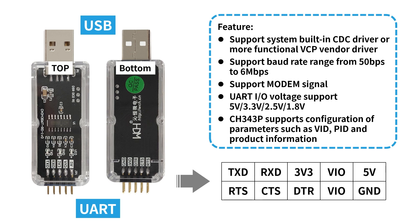Here are the features of the CH343 series. First, it can support system built-in CDC driver or the more functional VCP vendor driver. It also supports baud rate range from 50 bps to 60 Mbps, supports modem signals, and UART I/O voltage supports 5V, 3.3V, 2.5V, and 1.8V. The voltages that can be selected on the module are 5V and 3.3V.